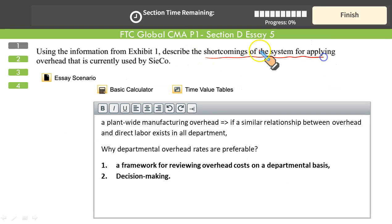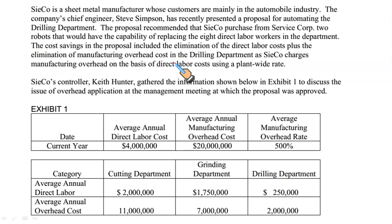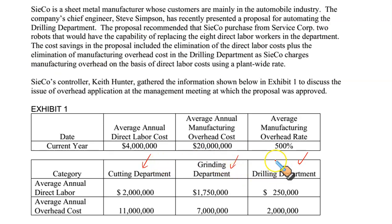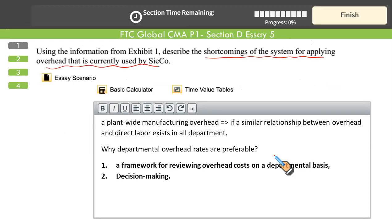A plant-wide manufacturing overhead rate is acceptable only if items are similar, undergo the same processes, or a single product is being manufactured. When you have different activities like grinding, cutting, and drilling, how can we have a single plant-wide rate? The activities in these departments are different — cutting has a different type of work, grinding a different nature, and drilling different again. That's why plant-wide is not suitable in this organization.